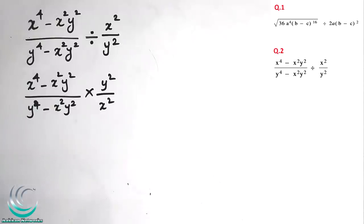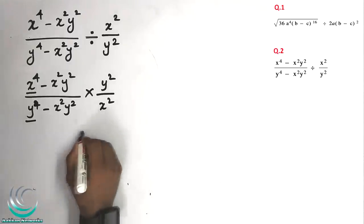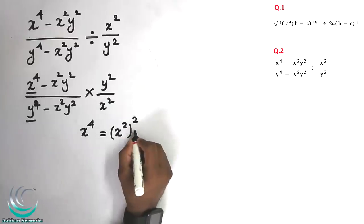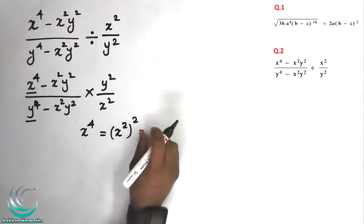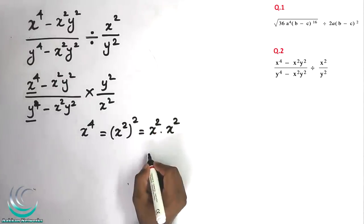Let's use x power 4 and y power 4. We convert: x power 4 becomes (x²)², and y power 4 becomes (y²)². So x power 4 will be rewritten quickly using this format.